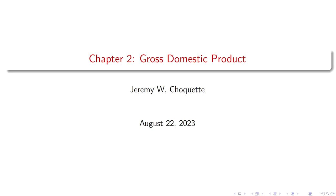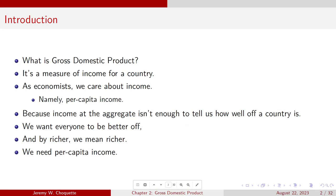Welcome to chapter two of the book where we're covering gross domestic product. What is it? Stay tuned to find out. Gross domestic product is a measure of income for a country. It doesn't necessarily have to mean that it's for a country — it can be for a state or a province within a country — but generally speaking, it's for the nation as a whole.